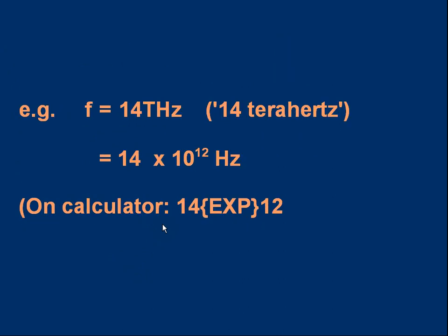Let's look at a particular example. Suppose you want to know the frequency in hertz, and you're told the frequency is 14 terahertz. What does that mean? Well, all you have to do is replace the T, tera, by 10¹². So that is 14 × 10¹² Hz. And on the calculator, you would enter 14, the EXP key - might be different on your calculator, but it means 10 to the power - and then you enter the 12, just like entering a standard form number.